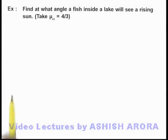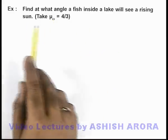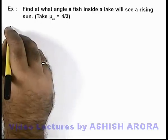In this example we are required to find at what angle a fish inside a lake will see a rising sun. We are given that the refractive index of water is 4 by 3.